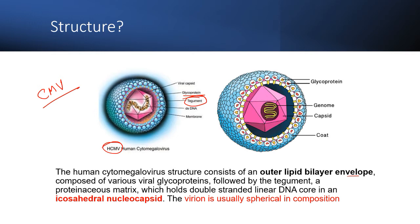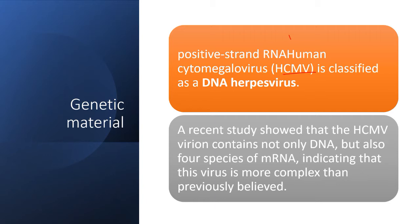It consists of an outer lipid bilayer envelope, an icosahedral nucleocapsid, and a tegument layer in between the nucleocapsid and the lipid bilayer. The membrane lipid envelope contains multiple glycoproteins as surface receptors. The virion is usually spherical in shape. Human cytomegalovirus contains DNA as its genetic material; however, recent studies showed that it also contains four species of mRNA, indicating that this virus is more complex than previously believed.